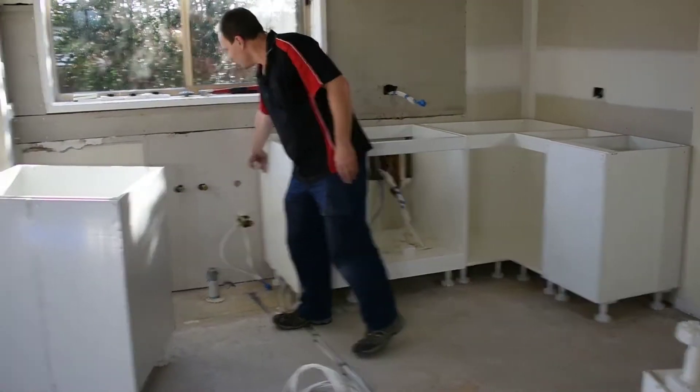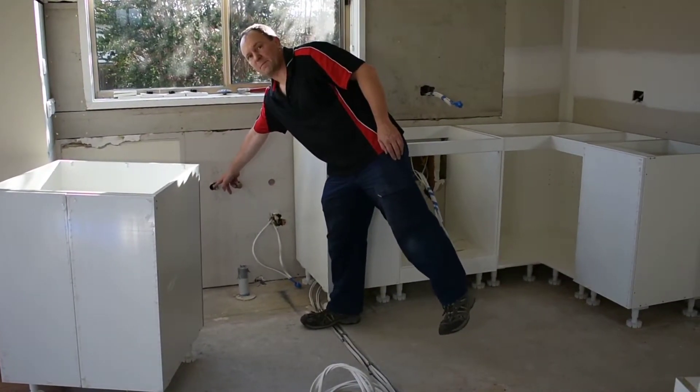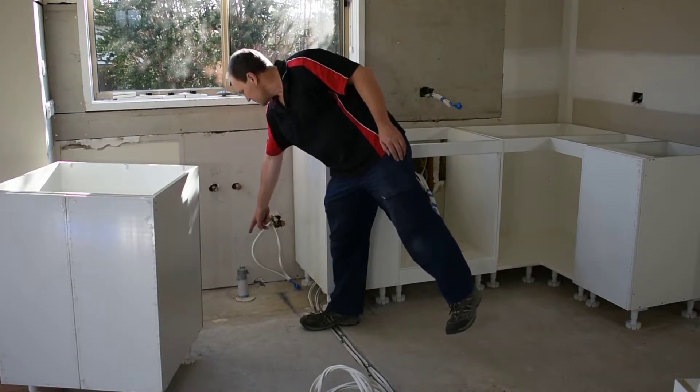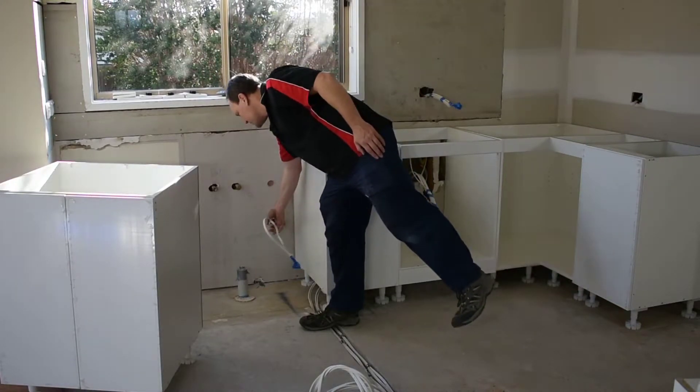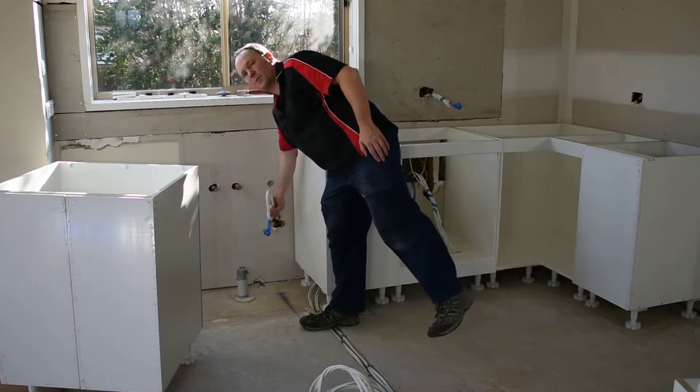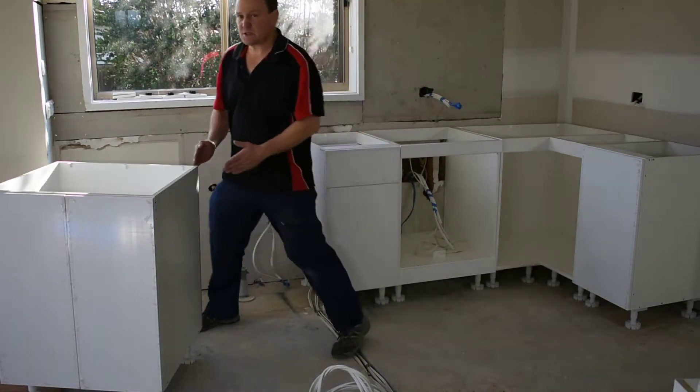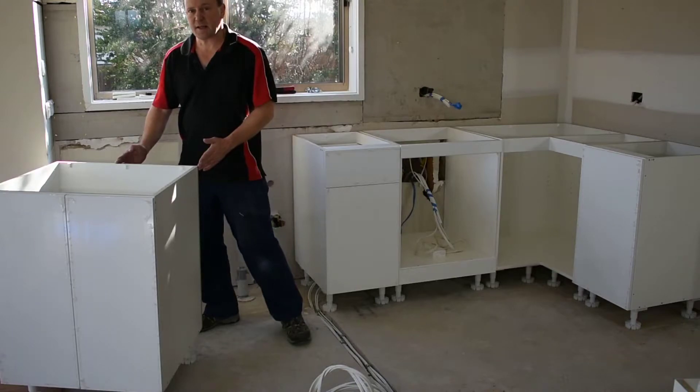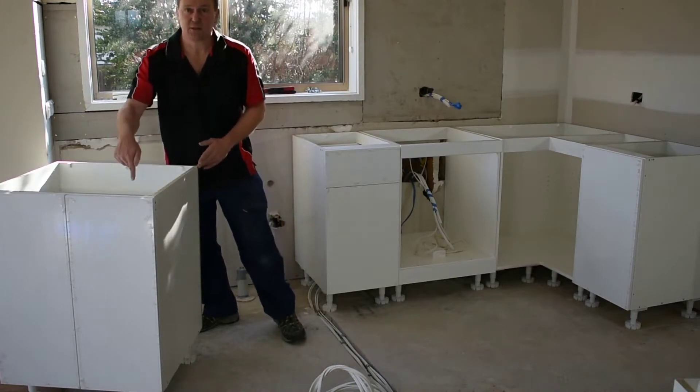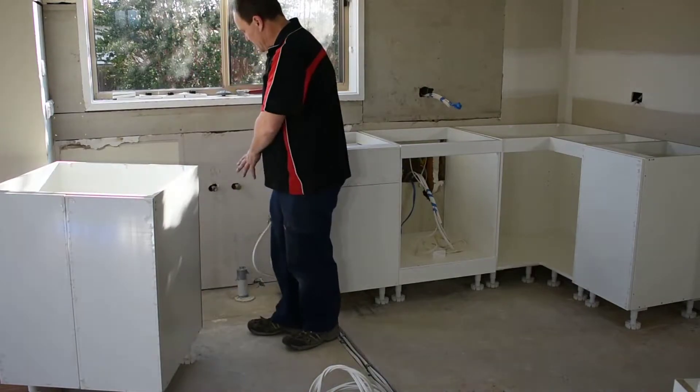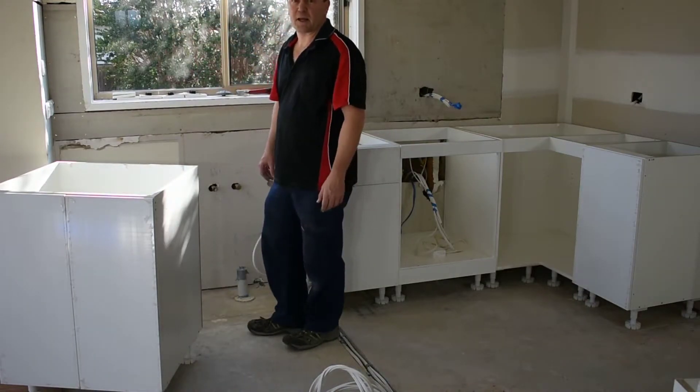With our sink cabinet we need to measure where the pipes are coming out from the wall, where the waste is, and where the dishwasher power point is. All those measurements need to be transferred onto the back of the sink cabinet, and then we literally drill through the sink cabinet and through the sink base to where all our plumbing outlets are.